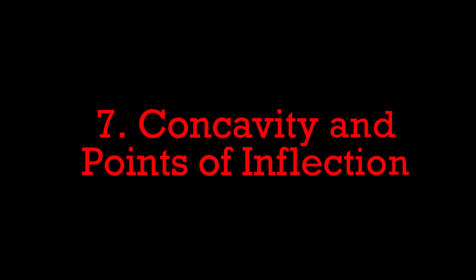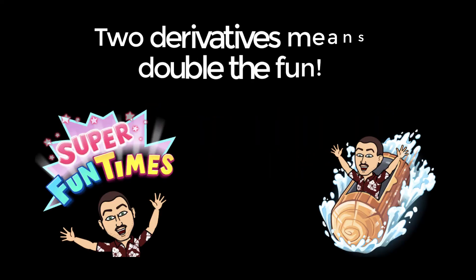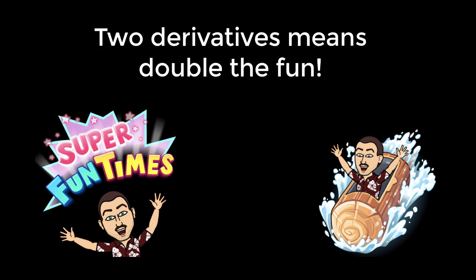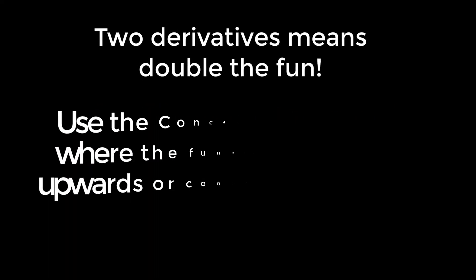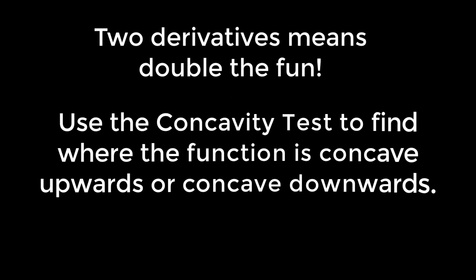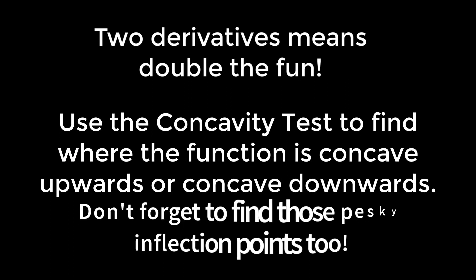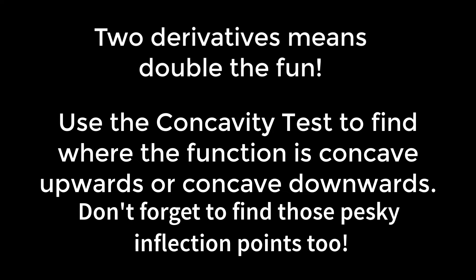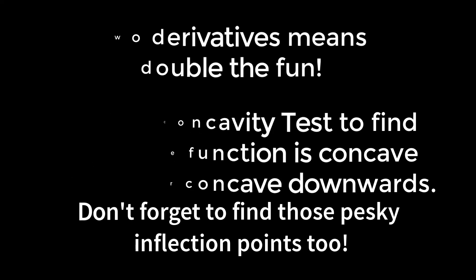Number seven: concavity and points of inflection. Two derivatives means double the fun. Use the concavity test to find where the function is concave upwards or concave downwards, and don't forget to find those pesky inflection points too.